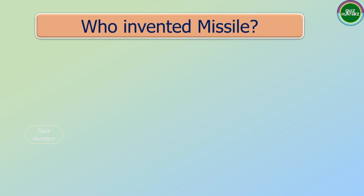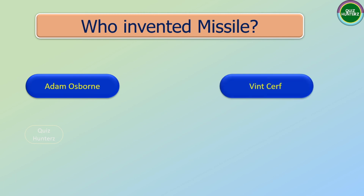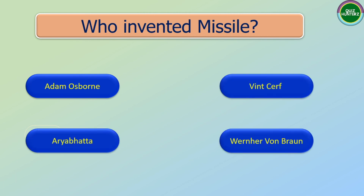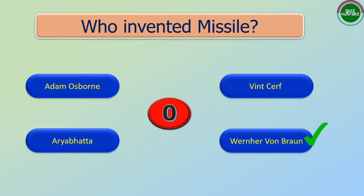Next question: Who invented missiles? The options are: Adam Osborne, Bin Sev, Aryabhatta, Wernher Von Braun. And the correct answer is Wernher Von Braun.